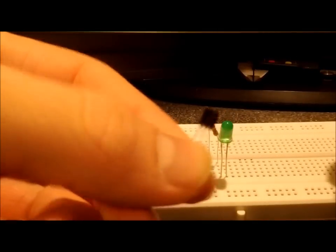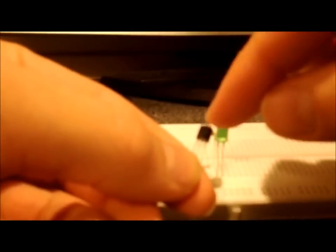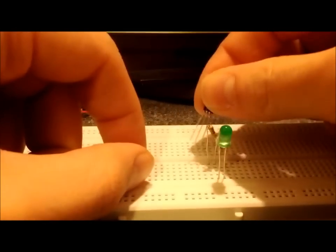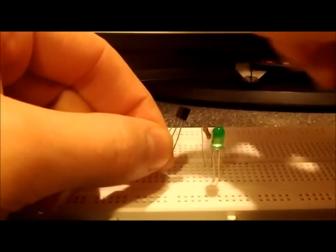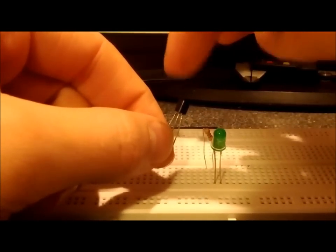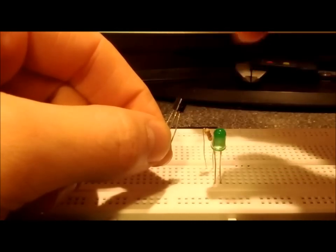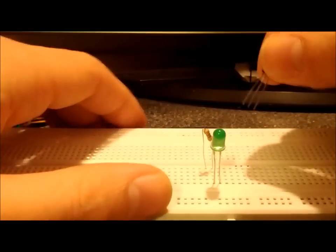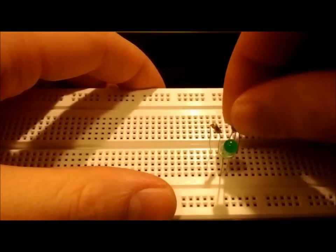We're going to use a transistor. This is an NPN transistor here. I'm using the rounded side toward me so I'm looking at the dot, which means that I know the far left leg is the collector, the middle is the base, and the right side is the emitter. So I'll put that into the board.